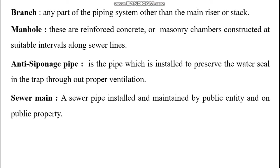Manhole: these are reinforced concrete or masonry chambers constructed at suitable intervals along sewer lines. Anti-siphonage pipe is the pipe which is installed to preserve the water seal in the trap through proper ventilation. Sewer main is a sewer pipe installed and maintained by a public entity and on public property.